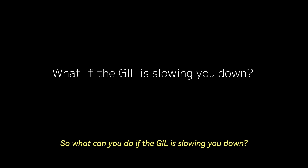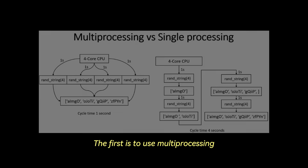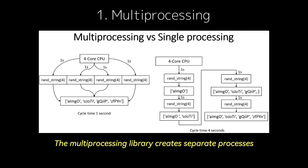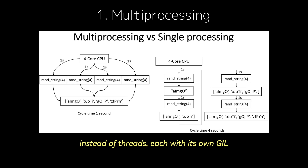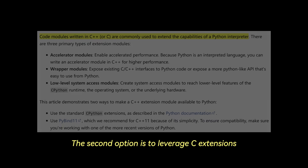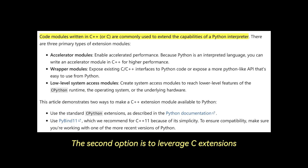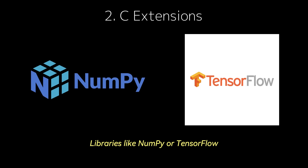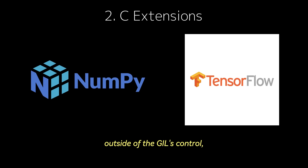So what can you do if the GIL is slowing you down? Here are a few options. The first is to use multiprocessing. The multiprocessing library creates separate processes instead of threads, each with its own GIL, and this allows your program to utilize multiple CPU cores. The second option is to leverage C extensions. Libraries like NumPy or TensorFlow perform heavy computations in C, outside of the GIL's control, so they can achieve true parallelism.